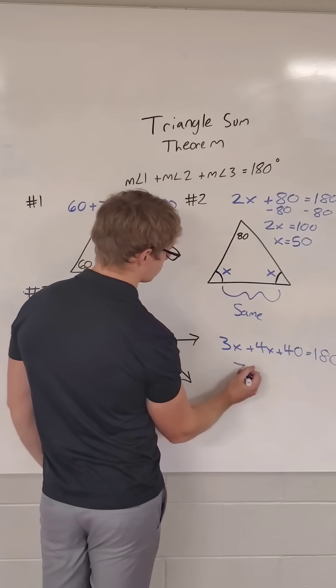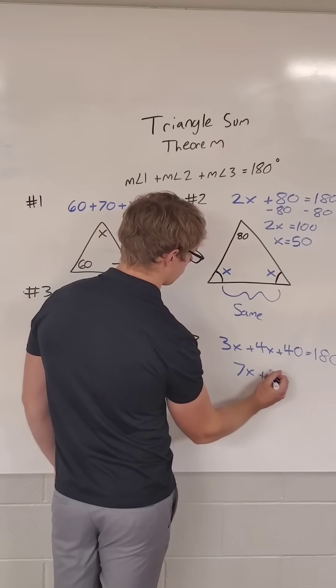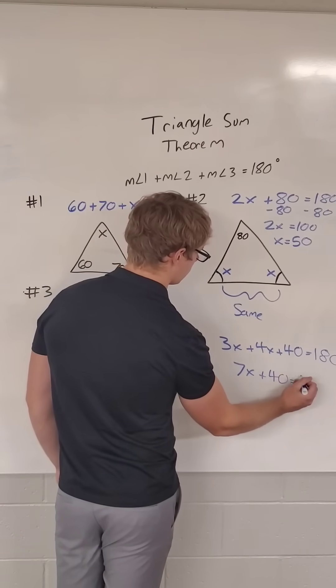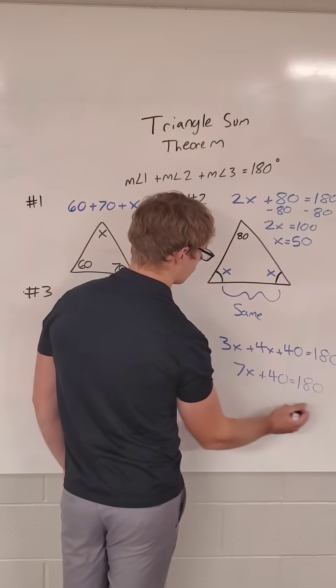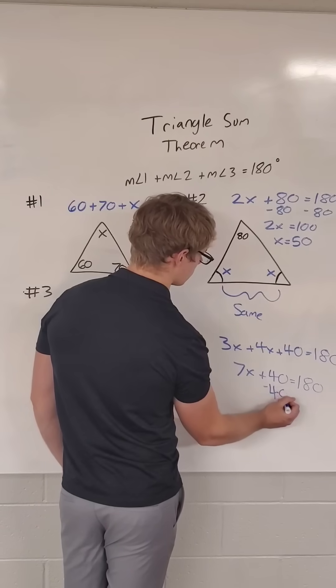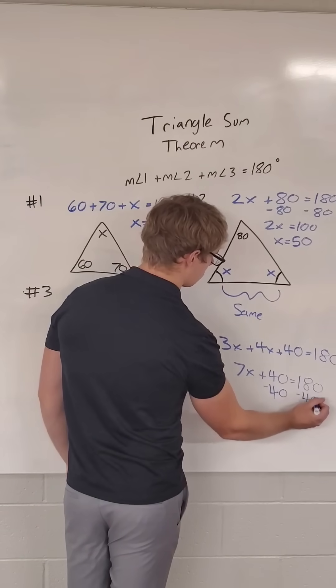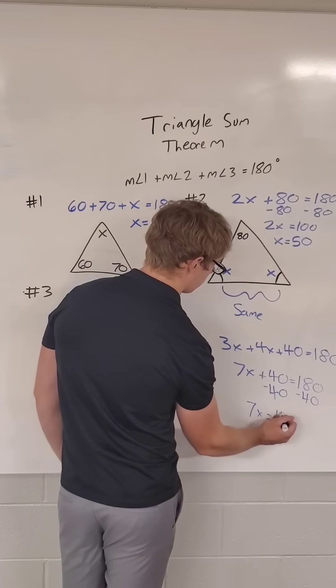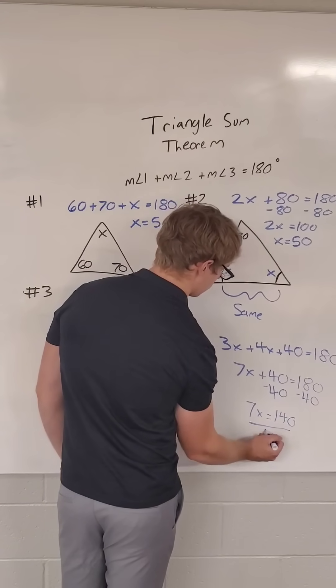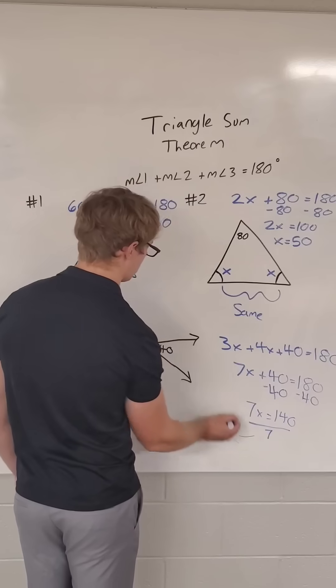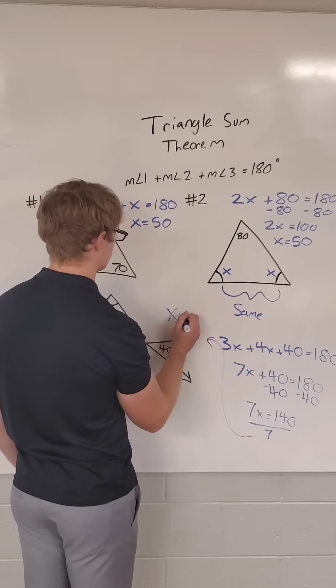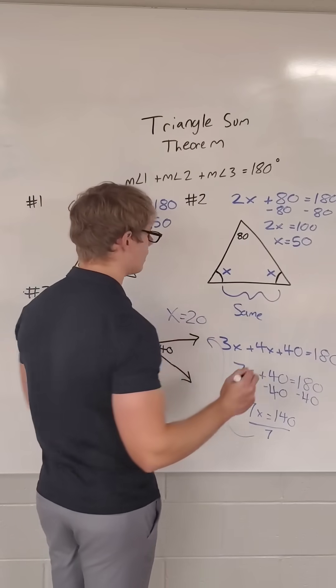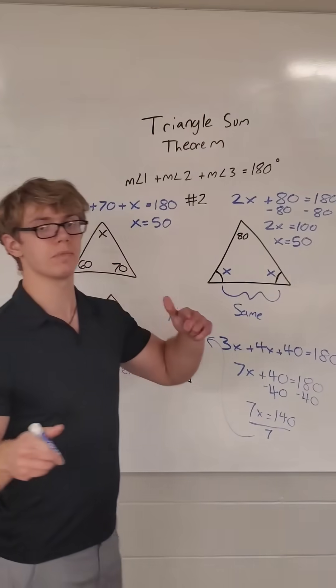Then we can combine like terms, 7x plus 40 equals 180. Now we need to subtract 40 from both sides. And then we can divide. We've got 7x equals 140. We divide by 7. And our answer up here is going to be x equals 20. And that is how you use the triangle sum theorem.